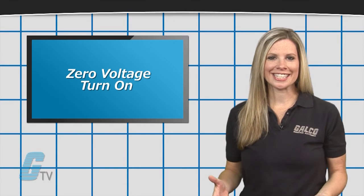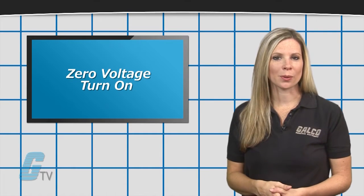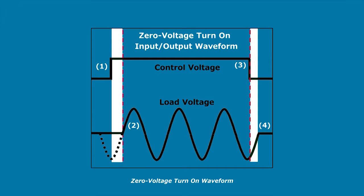Zero Voltage Turn On is ideal for resistive loads. It is a control circuit which allows an output to switch on the load current when the AC voltage is near the zero voltage point. Usually a control signal is supplied.